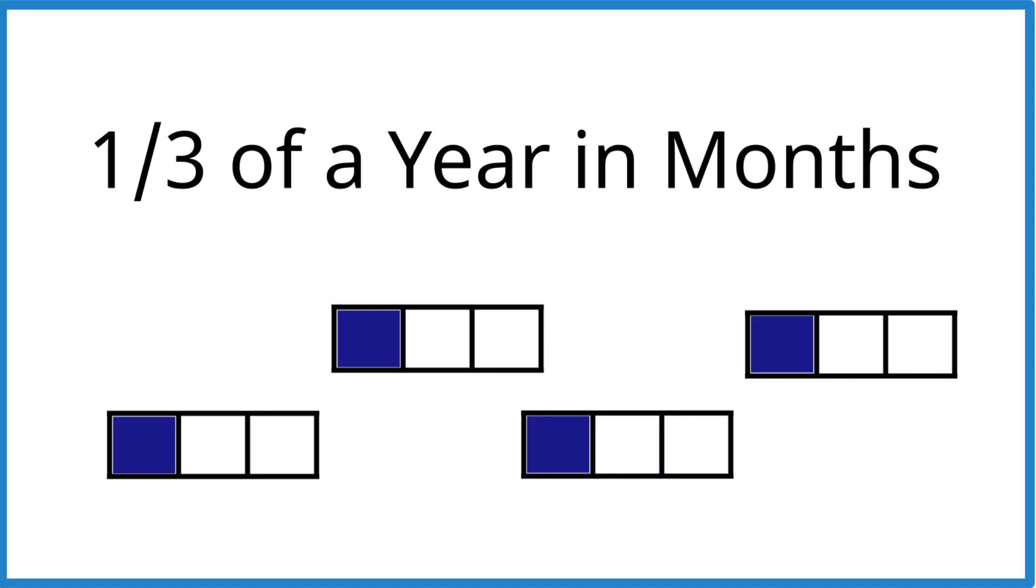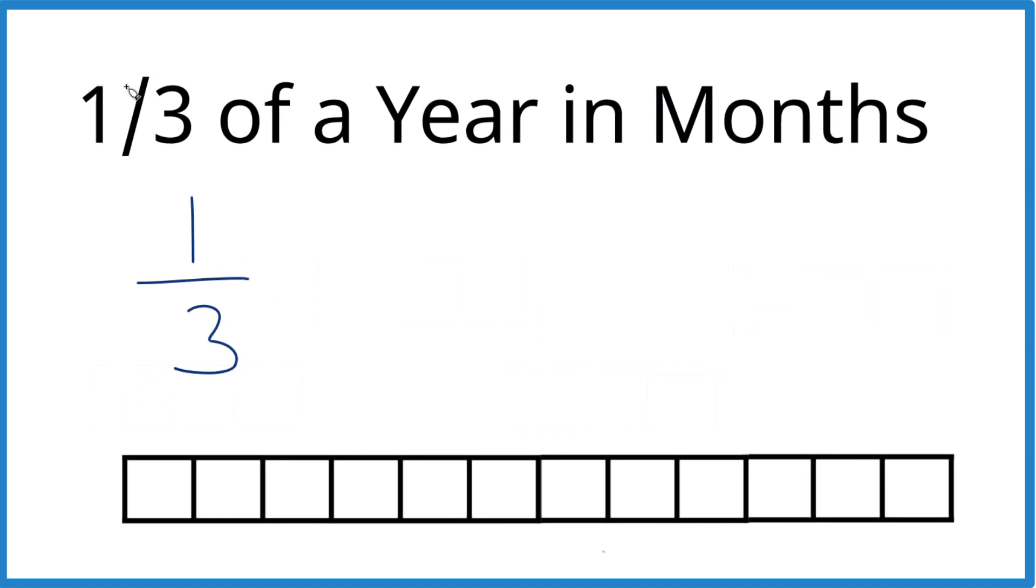There's another way we could do this. We could say we have one third of a year and a year has 12 months. So we want to find a fraction that's equivalent to one third, but has 12 down here in the denominator.